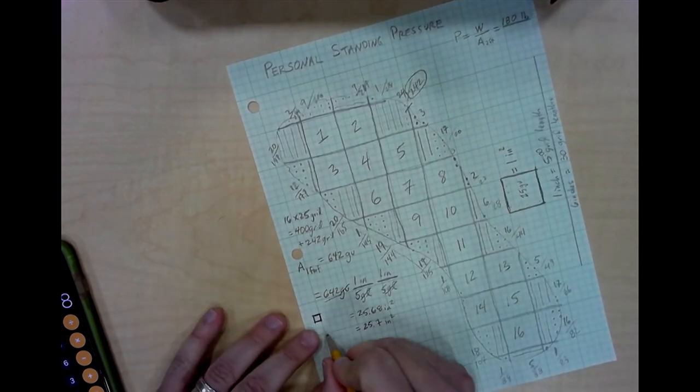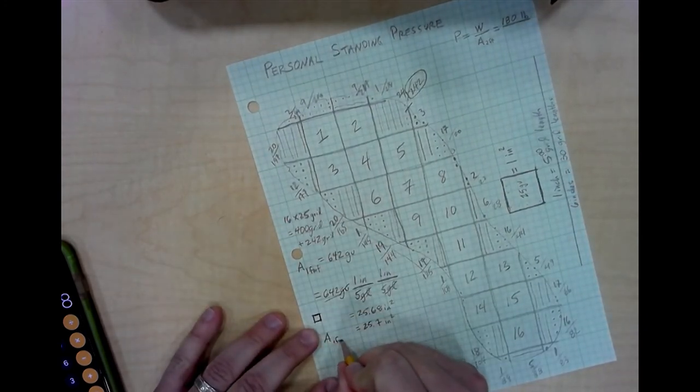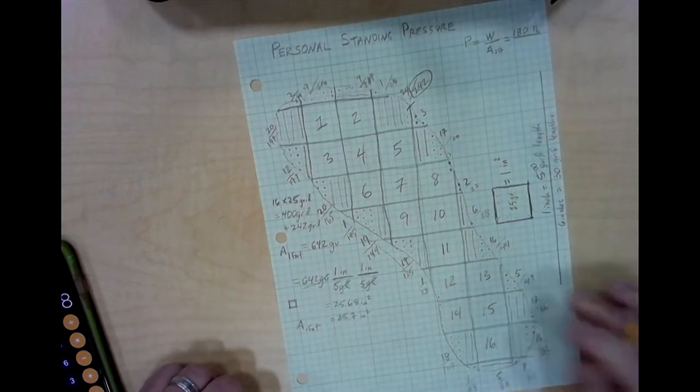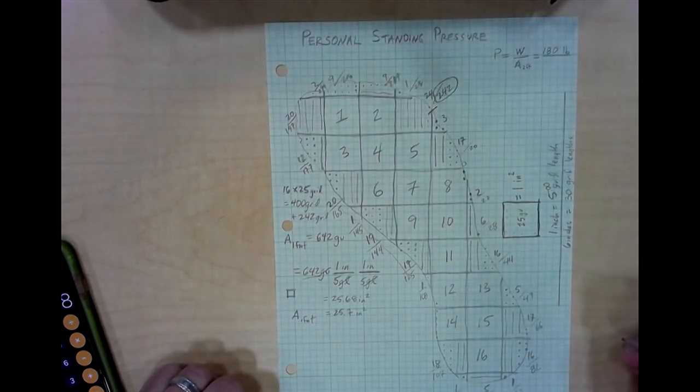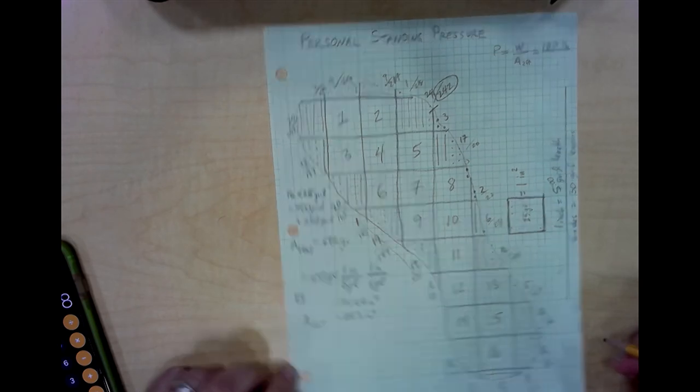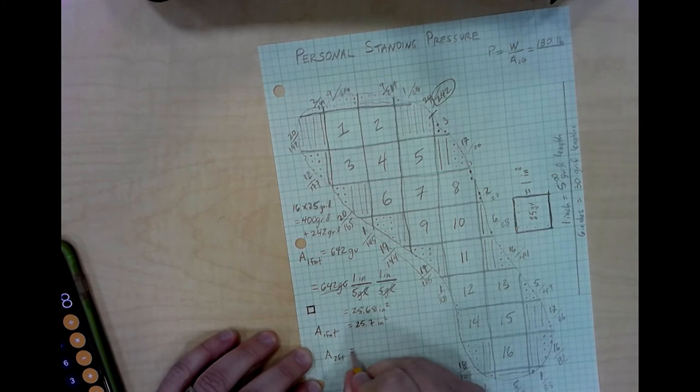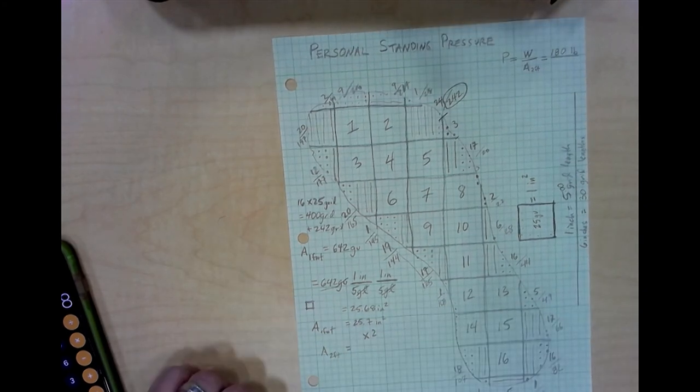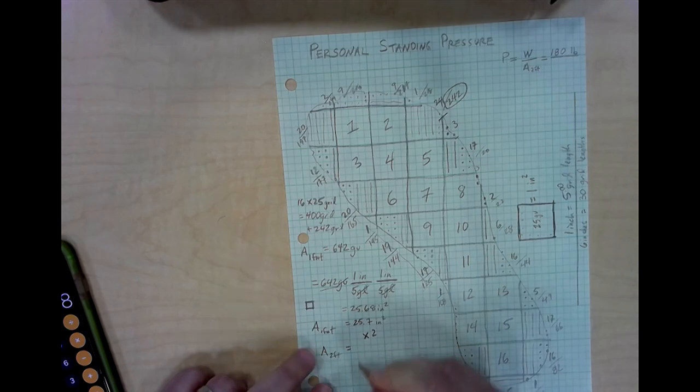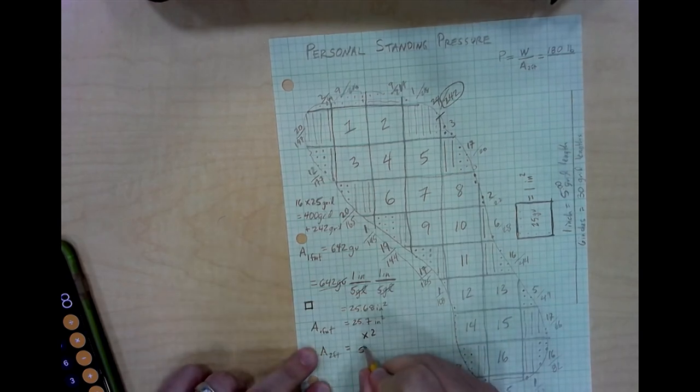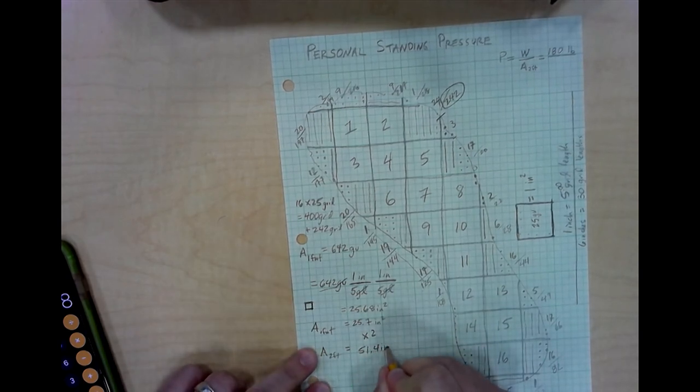so now I've established the area of one foot, 25.7 inches squared. But notice when I'm standing on the ground, I'm actually going to be standing on two feet. So the area of two feet is going to be this area times two. So I multiply that by two, I get 51.4 square inches.